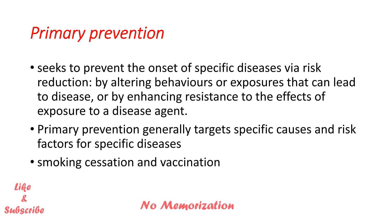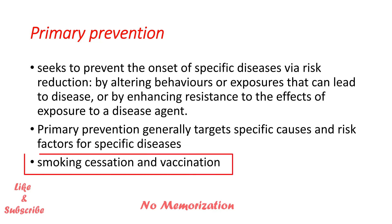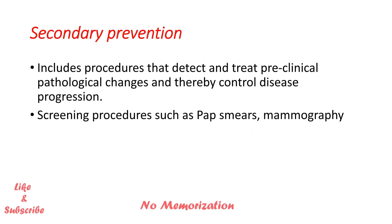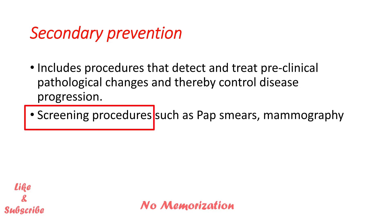Examples of primary prevention include smoking cessation and vaccination. Secondary prevention includes procedures that detect and treat pre-clinical pathological changes and thereby control disease progression. Examples include pap smears for cervical cancer and mammography to detect early-stage breast cancer.